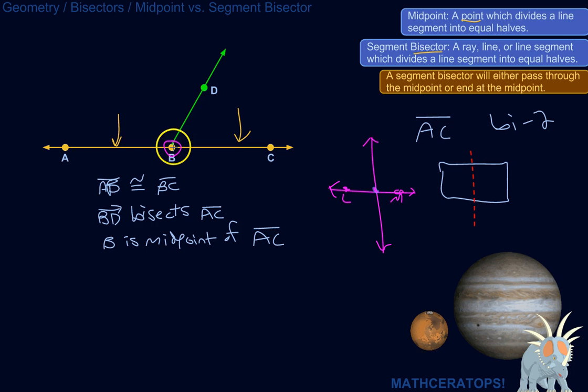All right, so a midpoint is the point which splits a line segment into two equal halves. A segment bisector is a ray or a line or a line segment which divides a line segment into equal halves.